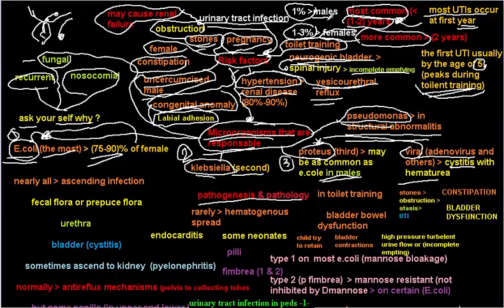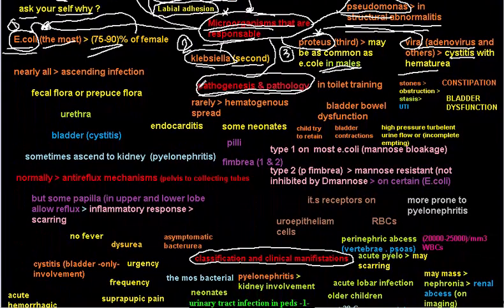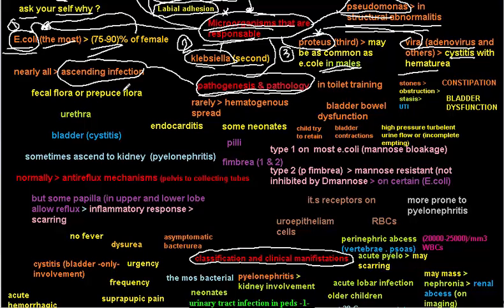Now let's move to pathogenesis. In most cases, UTI is an ascending infection. This means there is fecal flora in the perineum or under the prepuce of the penis. That flora moves to the urethra, ascends through the urethra, and then ascends to the bladder, causing cystitis — the first type of UTI.